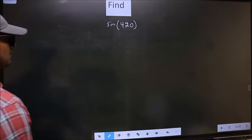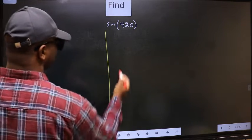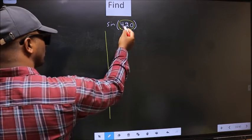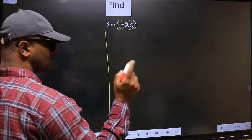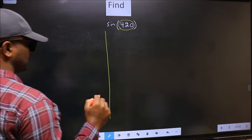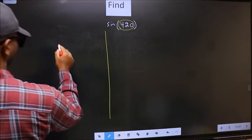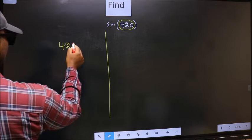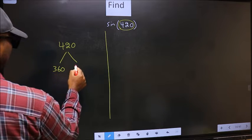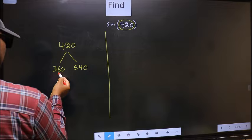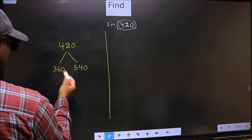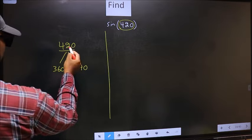See, here we have 420. You should check 420 lies between which two multiples of 180. What I mean is, 420 lies between 360 and 540. This is 180 times 2 and this is 180 times 3. Between these two numbers, 420 lies.